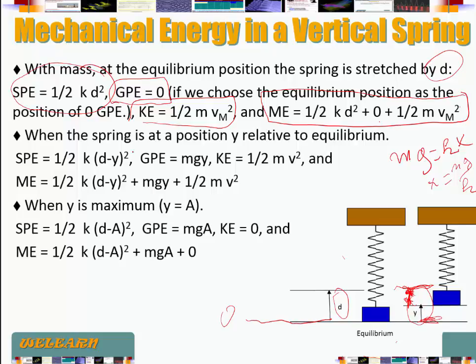The amount of stretching of the spring when the mass is at position y is d minus y. Notice that if our mass is displaced downward, y is negative, so d minus y is going to be a number bigger than d, which works correctly. So the spring potential energy is one half of k(d − y) squared. The gravitational potential energy is mgy, and the kinetic energy is one half of mv squared.